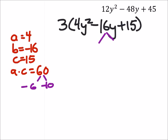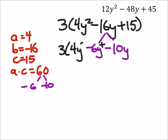And it doesn't matter which one you use where, let's just make that a negative 6y, and then minus 10y right there. If that helps, you can put a plus between those as well. So this is what we have now, 4y squared minus 6y plus negative 10y, plus 15.